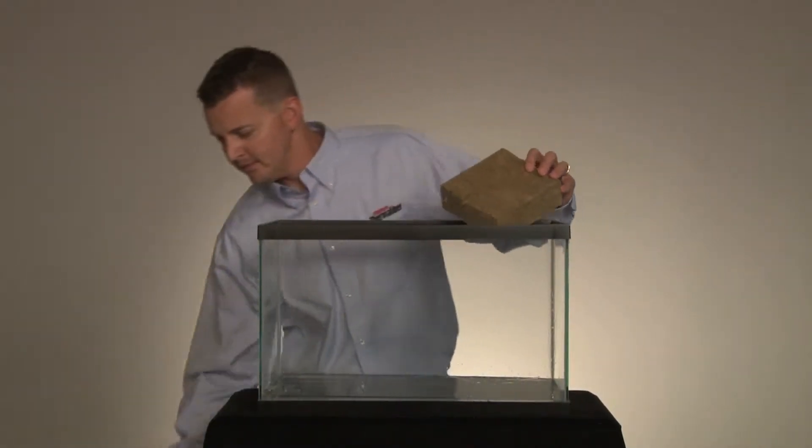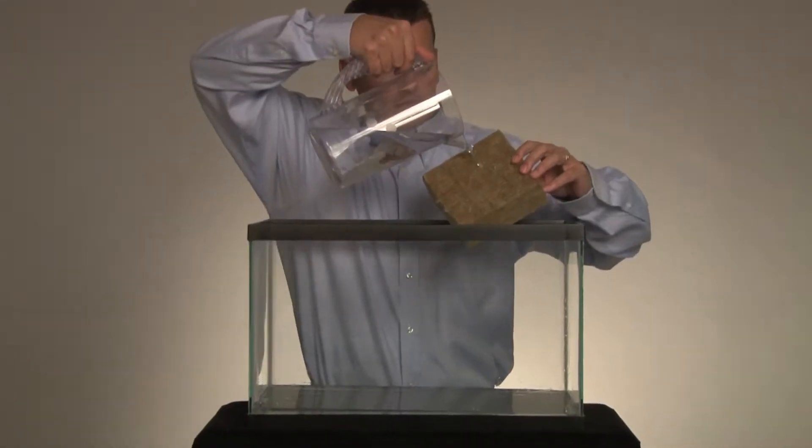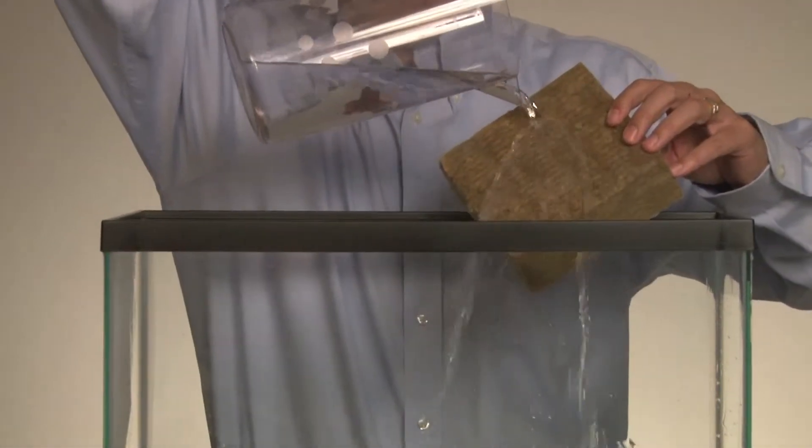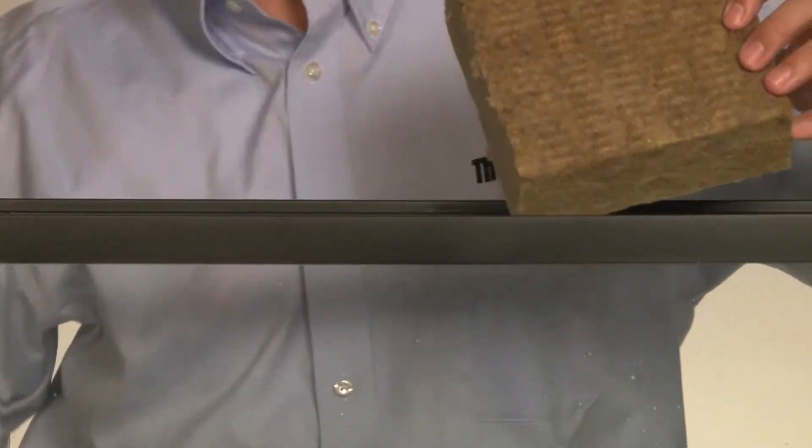In this video, we will be demonstrating the water repellency of the RainBarrier continuous insulation. A pitcher of water is poured directly on the RainBarrier insulation. Notice how the water runs directly off the insulation and is not absorbed into the material.